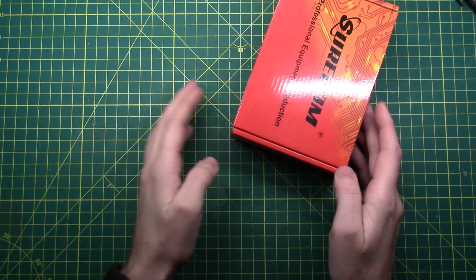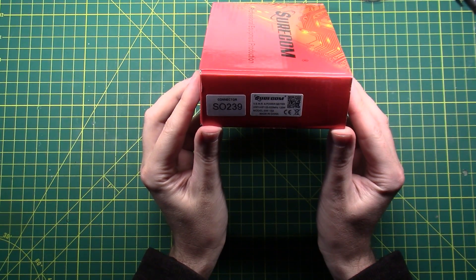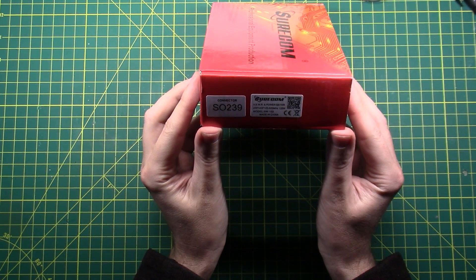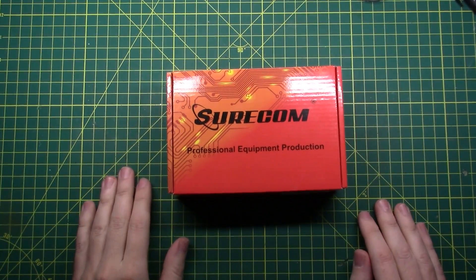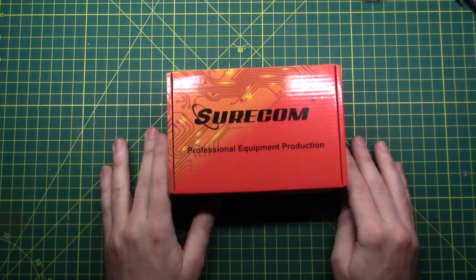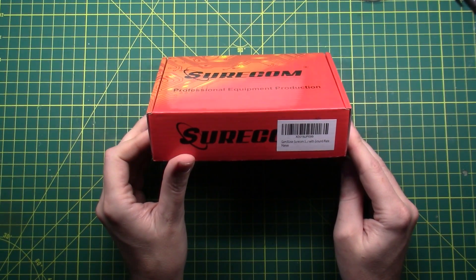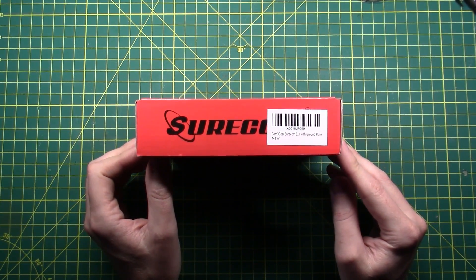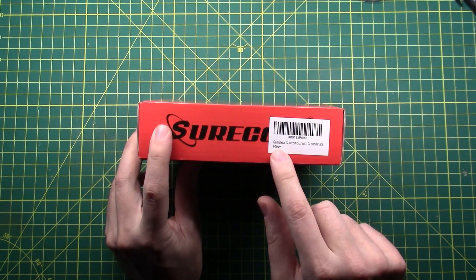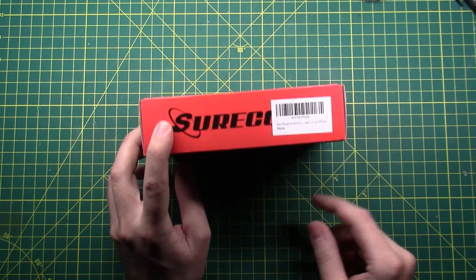Okay, Shurcom SWR and power meter, model SW102. Alright, Shurcom SW102, let's throw that over from the beginning. Shurcom SW102, GAN 3-gear Shurcom with ground plate, and it's new, just in case you didn't know. Let's open this thing up.